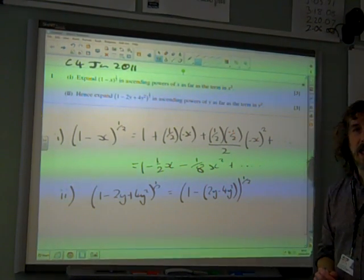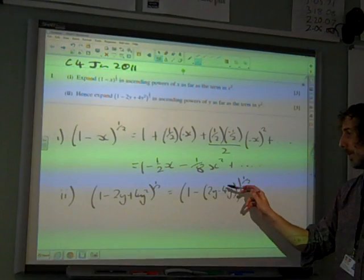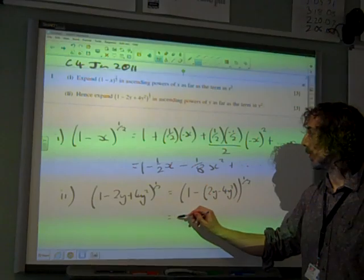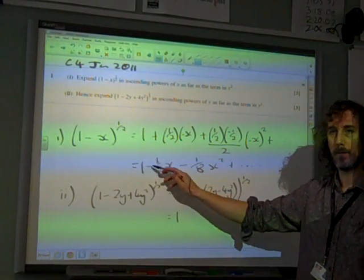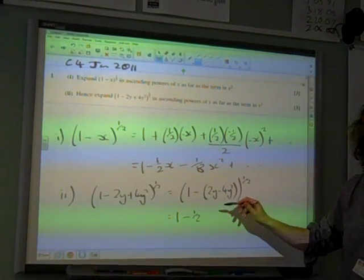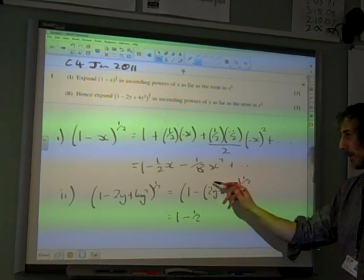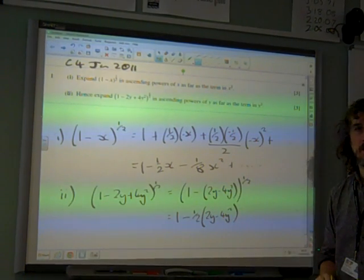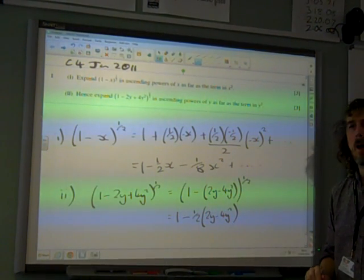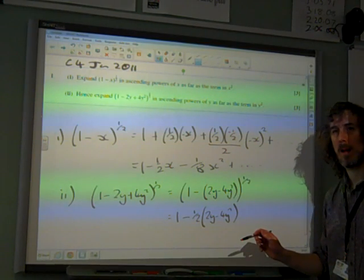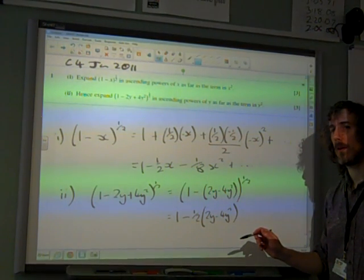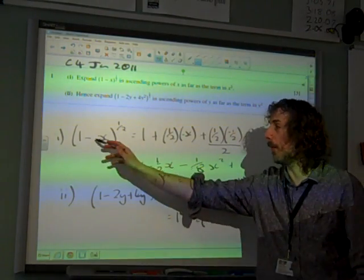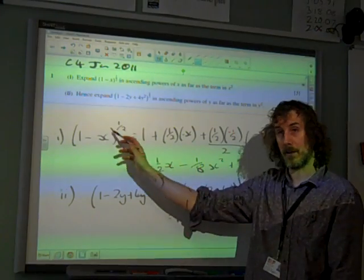Notice that we had to be careful with that plus sign there, making sure it was negative. So we are going to replace the x that we had in this expansion with 2y minus 4y squared. So that's going to become 1, because that was a 1, minus a half of the x bit. And the x bit is that 2y minus 4y squared. Are you alright? Oh, I forget. Why is it minus 4y squared?